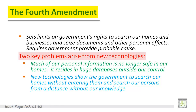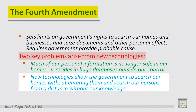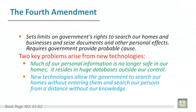The first problem is that much of our personal information is no longer safe in our homes, because it resides in huge databases outside our control. The second problem is that new technologies allow the government to search our homes without entering them, and to search our persons from a distance without our knowledge.